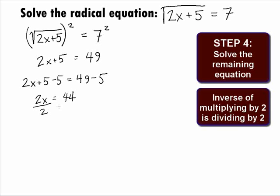Next, we want to divide both sides by 2 and get 2x over 2 equals 44 over 2, which will simplify to be x equals 22.